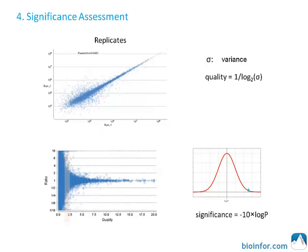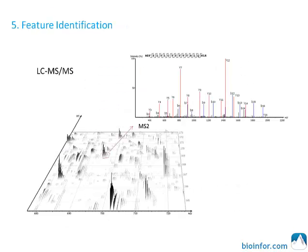The feature quality is defined as 1 log sigma, where sigma is the average variation. Given the observation of a feature variation in two biological states, a significance value is calculated, which is defined as minus 10 log p, where p is the p-value to observe such variation in the replicate runs.